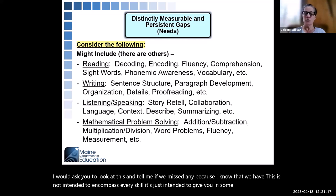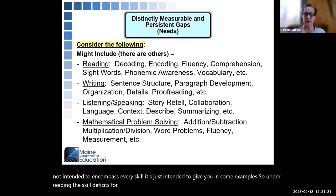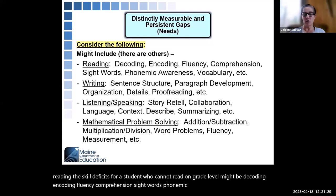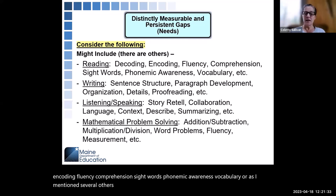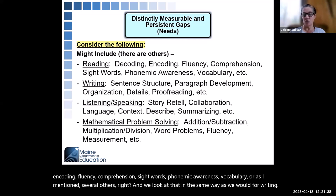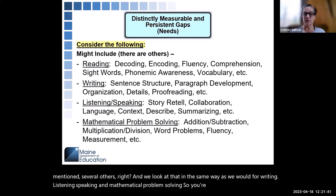Under reading, the skill deficits for a student who cannot read on grade level might be decoding, encoding, fluency, comprehension, sight words, phonemic awareness, vocabulary, or several others. And we look at that in the same way for writing, listening, speaking, and mathematical problem solving. So you're going to really focus on the skill.